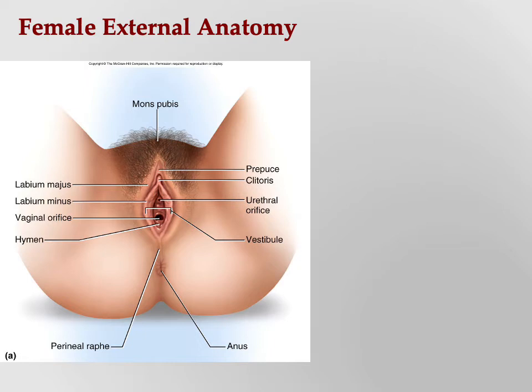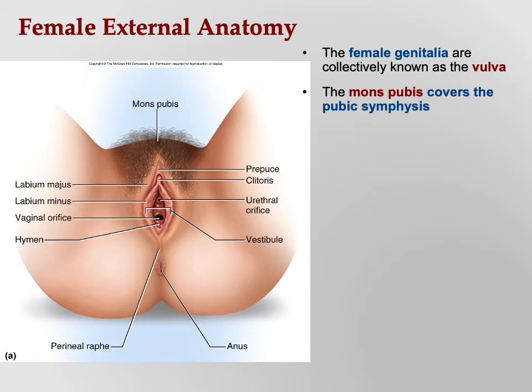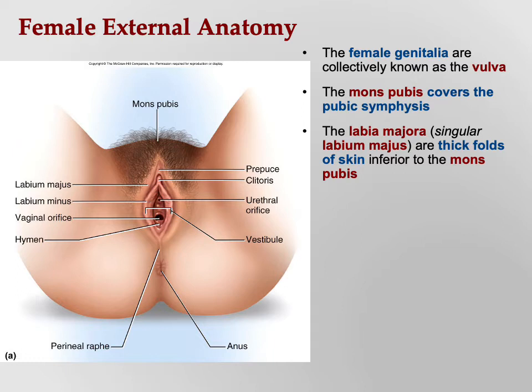Looking at external genitalia — the female genitalia are collectively known as the vulva, a broad term for the whole set of structures. The mons pubis covers the pubic symphysis; mons literally means mountain, so it's the pubic mountain. The mons pubis is normally covered with pubic hair.